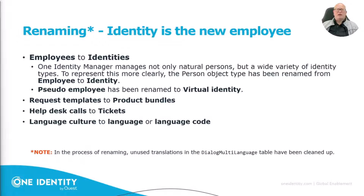The reason this was not renamed earlier is that employees are one of the main objects, and renaming everything — finding the right display name for everything — also has an effect on the multi-language table, meaning all translations for other languages. If you created any translations based on employees, it is now time to recreate those translations, as there are no employees in the system at all as a basic template. You now have to use the term identities.